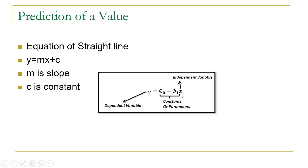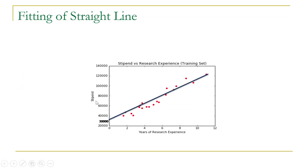We have x as the independent variable and y as the dependent variable. Here phi 0 is equivalent to c and represents a constant value, while phi 1 is equivalent to m and represents the slope of the line. We will use this equation to find out the value of our dependent variable y based on the value of independent variable x. In our example, we have to find out the value of stipend based on research experience.